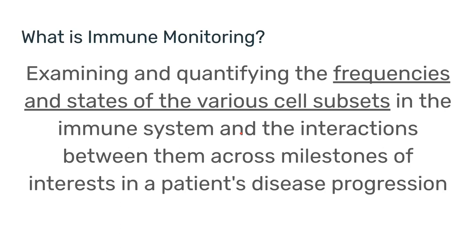Going back to the definition of immune monitoring, we are looking at different populations in the immune system, and we would like to compare their frequencies and states. The previous video talked about differential abundance analysis, which looks at the frequencies of these subsets, and now we're going to look at their states.